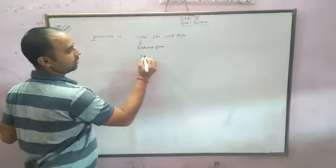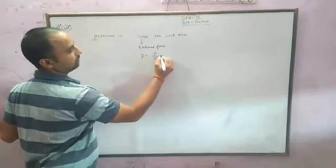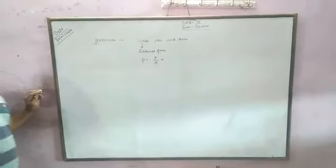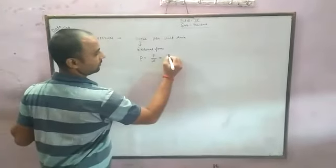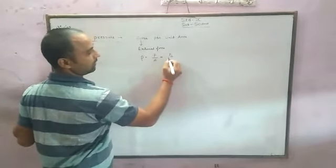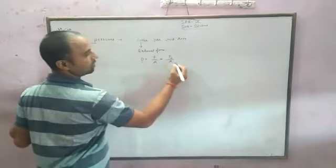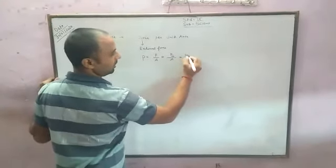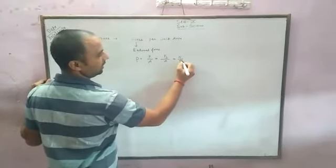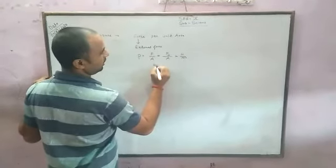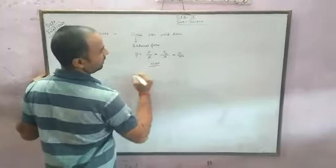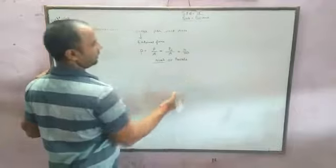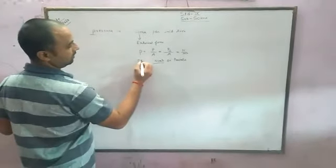Pressure is equal to force upon area. This force is perpendicular to the area. This is the perpendicular component of force on the surface. What is the unit? Force is measured in Newton, area is meter square. Then unit is Newton per meter square or Pascal. This is the SI unit.